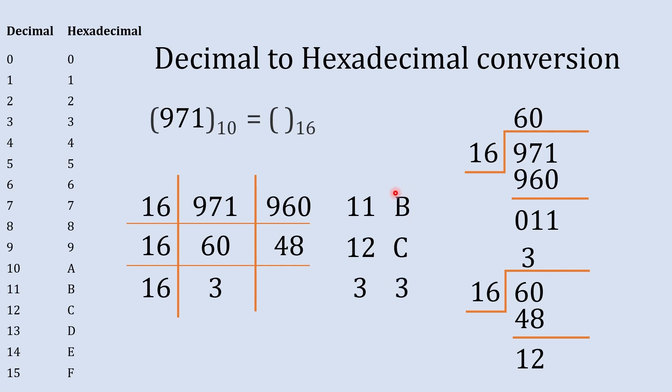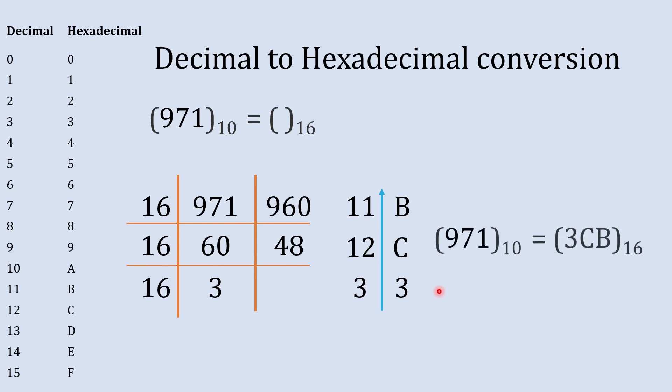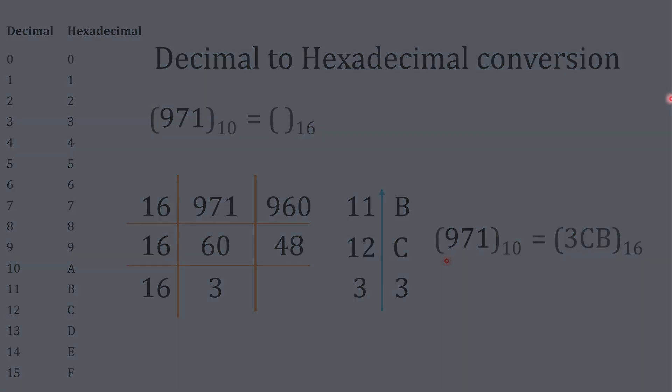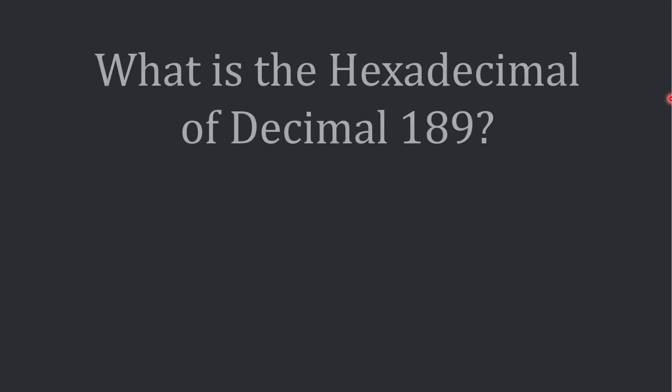So now we have represented all these remainders in hexadecimal number and now we'll combine all these remainders and write it from bottom to top like this 3CB. So this is hexadecimal equivalent to this decimal number.